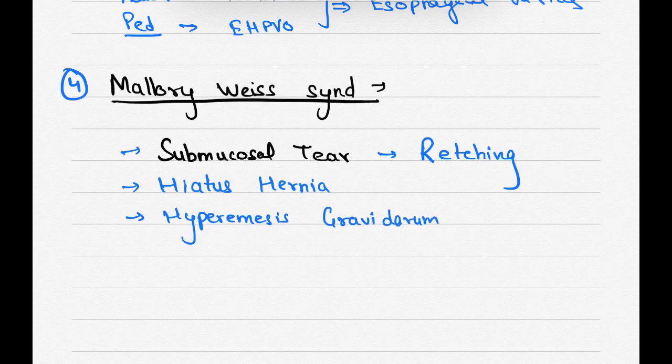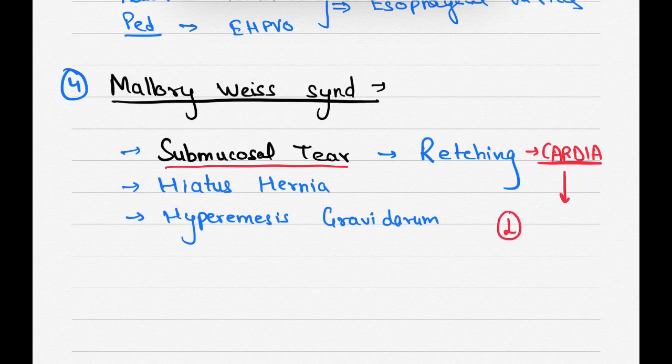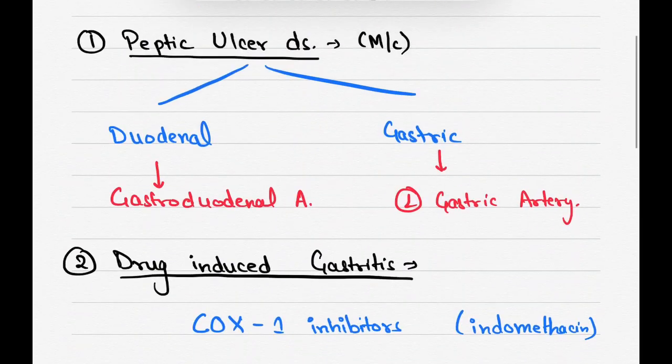So the site of submucosal tear, this submucosal tear, the site is cardia of stomach, cardiac part. And the source of bleeding is left gastric artery, which is same as the gastric ulcer artery.